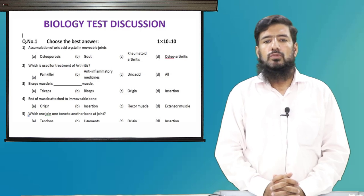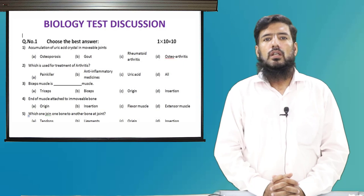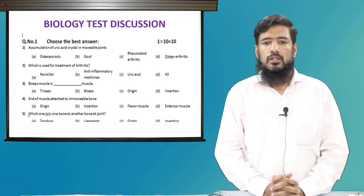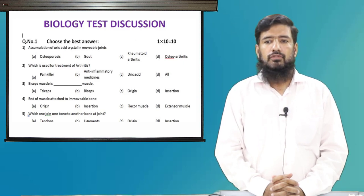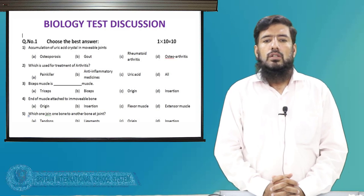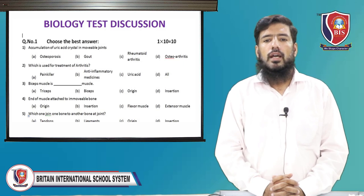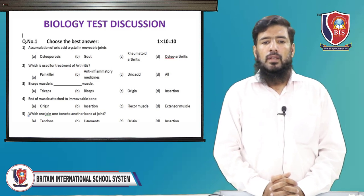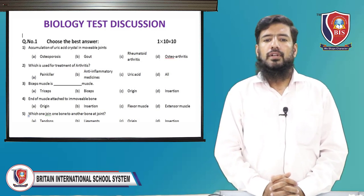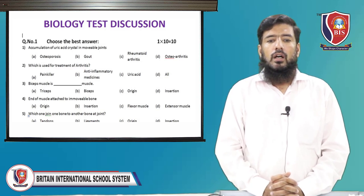Objective number one: accumulation of uric acid crystals in the movable joints. The options are: osteoporosis, gout, rheumatoid arthritis, and osteoarthritis. The correct answer is gout — option B. Gout is the correct answer.